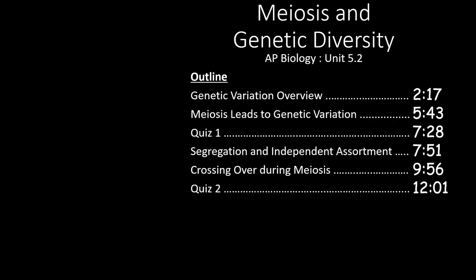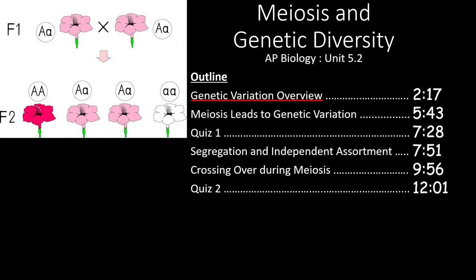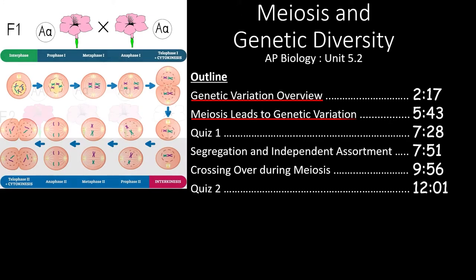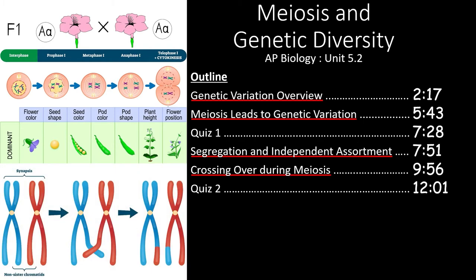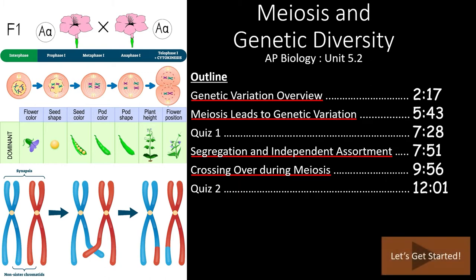In this video, we're going to cover section 5.2 of the AP Biology Curriculum. First, we're going to look at what genetic diversity is on the molecular level and why this genetic variation is so important. Then we'll see how the process of meiosis distributes genetic variations throughout a population. After the first quiz, we'll take a closer look at the Law of Segregation and the Law of Independent Assortment, two byproducts of meiosis that ensure genes are randomized through the creation of gametes. Finally, we'll see how the process of crossing over in meiosis helps overcome some of the limitations of storing multiple genes on the same chromosome. If you only need to review one of these sections, feel free to skip forward to the times outlined here. Otherwise, let's get started!